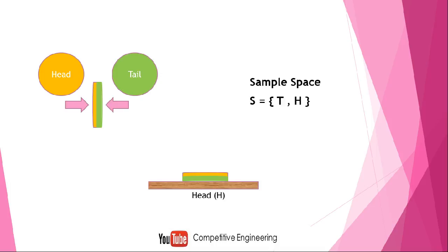The size of the sample space is two — one tail and one head. In one throw, what is the probability of getting a tail? The number of chances of getting tail is one, divided by the total number of outcomes, two — so it is 1/2. Similarly, the probability of getting head is also 1/2. I hope you understand the concept of a single coin toss.